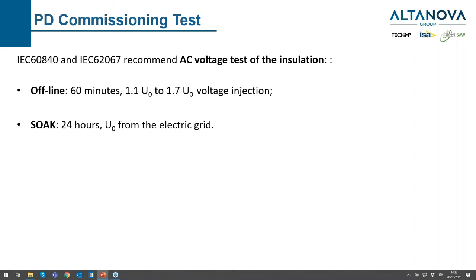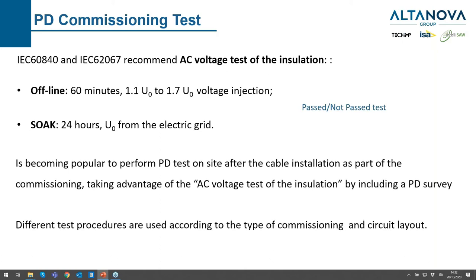The most followed standards for high voltage cable site testing are IEC 60840 and IEC 62067. After laying the cable, we have to perform tests to prove that the insulation is okay. An offline test is a 60-minute voltage injection where we inject from 1.1 up to 1.7 times the rated voltage. Another solution is the soak test, where we keep the cable for 24 hours at normal voltage by connecting it to the grid — a pass or not-pass test. Nowadays, it is becoming popular to perform PD tests on site as part of commissioning, including a PD survey within the AC test.